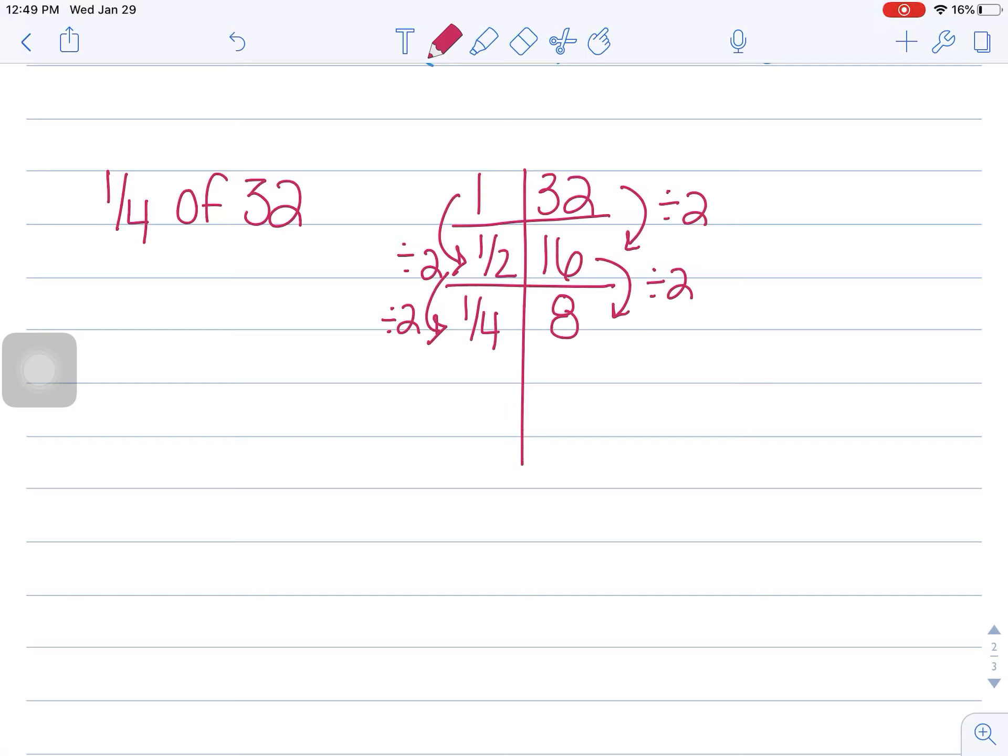So what I'm noticing and visualizing here is one times 32 is 32. See that correlation here, one times 32, right? And one-half times 32. So I have a half times 32, which is 16. And then the next one will obviously be a fourth times 32, which is 8. Go ahead and write this. You can visualize it.